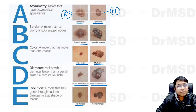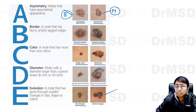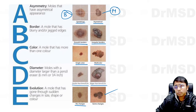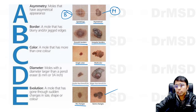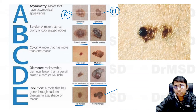E stands for evolutionary changes. A benign mole will not show any evolutionary changes over years, whereas malignant lesions will suddenly show changes in the form of shape, color, surface texture, or ulceration. So ABCDE stands for Asymmetry, Border, Color, Diameter, and Evolutionary changes.